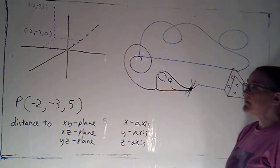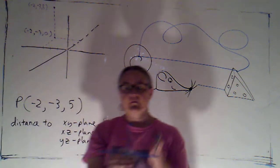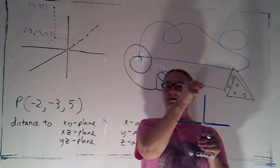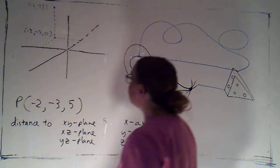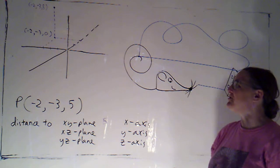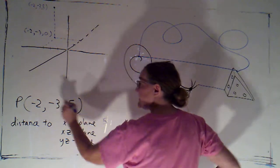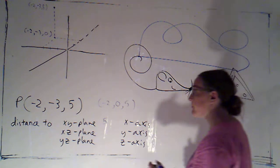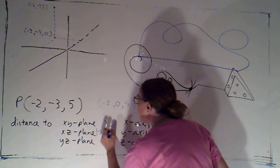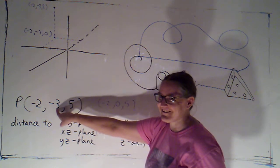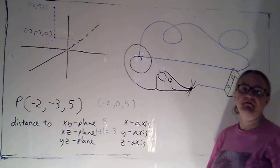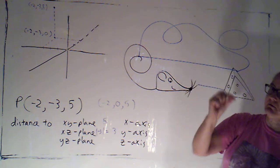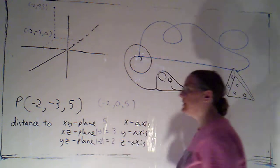To the xz plane — that's this plane right here — if here's my point, to get to the xz plane I want to go straight to the right. The projection onto the xz plane has the same x and z values but the y value is zero, so I'd be looking at the distance between this point and negative two, zero, five. By inspection I'm moving to the right a distance of three. Similarly, for the distance to the yz plane, I'm two back so I'll have to come two forward. That distance is the absolute value of negative two, which is two.